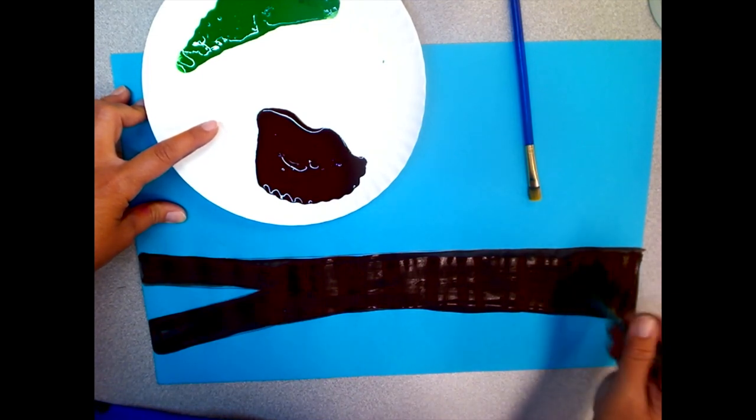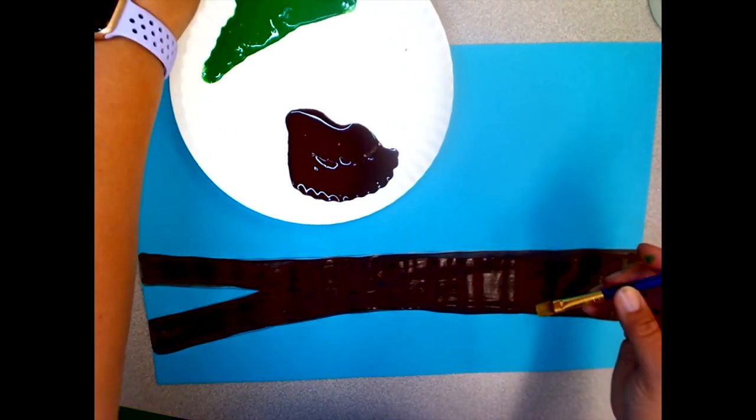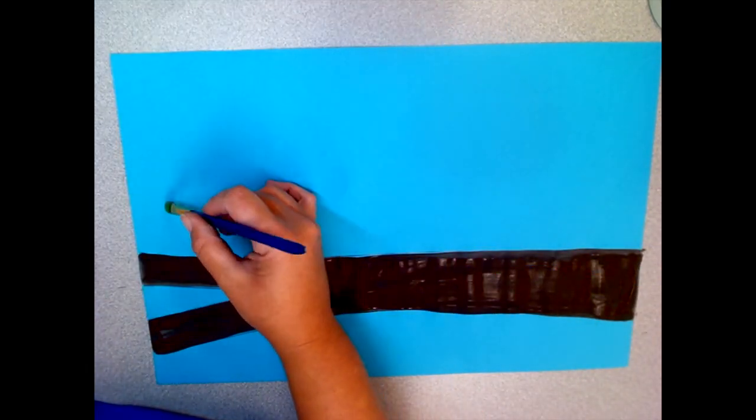Your leaves can be either oval or football shape. You're going to use green paint and a new paintbrush to make your leaves.